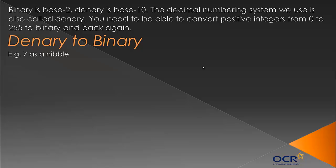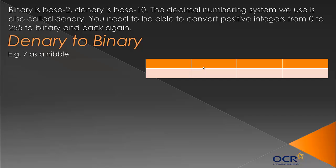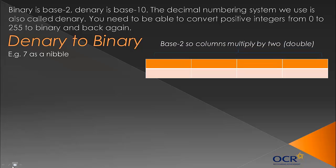First of all, let's look at how you can convert the positive decimal number 7 as a nibble to binary. A nibble has four bits — four binary digits. My method is to draw however many boxes we're asked to do. For a nibble that's four, so I create a table of four columns and two rows, and then I label my columns.